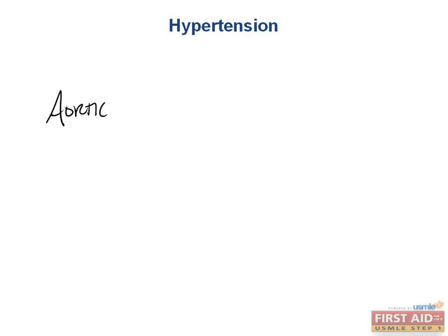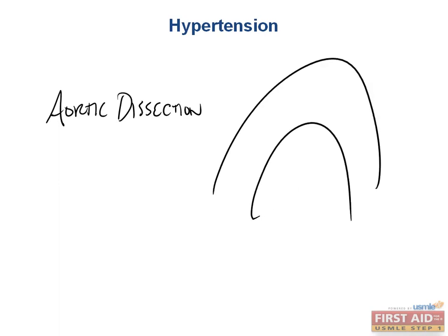Aortic dissection is another important consequence of the risk factor of hypertension. If the aorta is continually pounded by high pressures, there is an incredibly high amount of shear force, which can eventually cause damage to the intima and the media. This sets you up for a weakened aortic wall and potential dissection. Hypertension is a risk factor, in addition to Marfan syndrome.